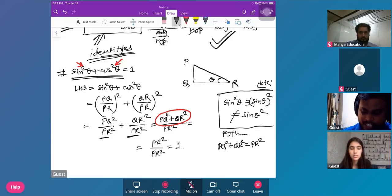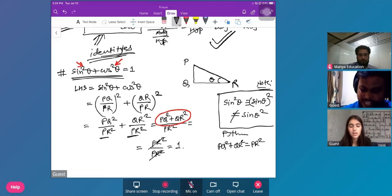PR squared, and then you will get it will be cancelled out. You will get one.